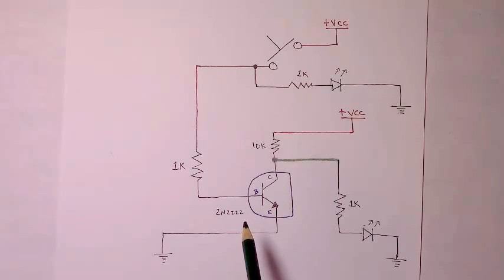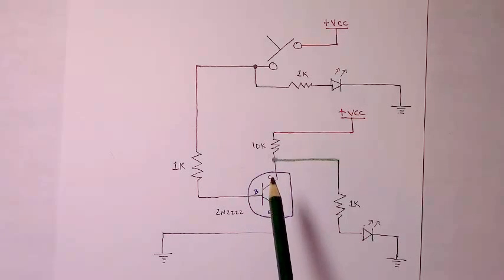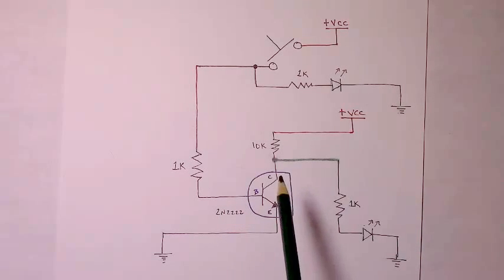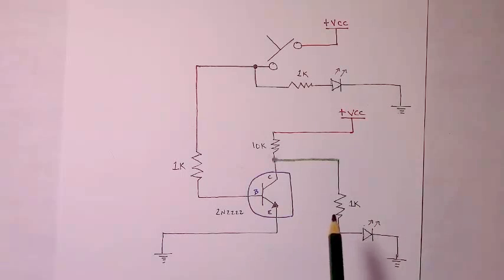Most any NPN transistor will work with this circuit. You just have to be careful to properly align your collector and emitter on that transistor. Not all 2N2222s will be oriented with a flat side facing to the right, as is the case with the one I'm using.